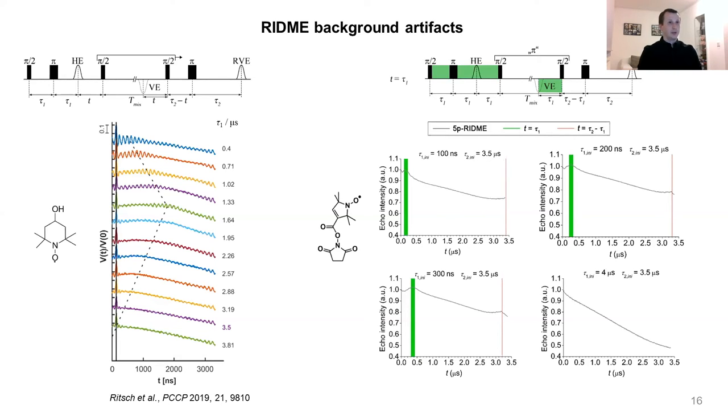In order to have an idea what can be the origin of this artifact, we looked at the RIDME sequence once again and realized that at the condition when t equals τ₁, we have a subsequence within the RIDME sequence which looks very much like a Carr-Purcell sequence. We have the first interpulse interval τ₁, then 2τ₁, and again τ₁. So we think that the origin of the first artifact in the RIDME background is dynamic decoupling, and that also would explain why the amplitude of the background goes up at t equals τ₁.